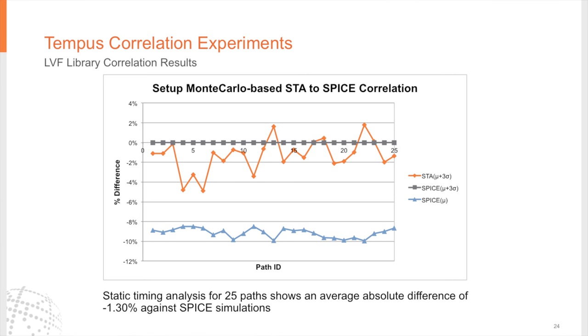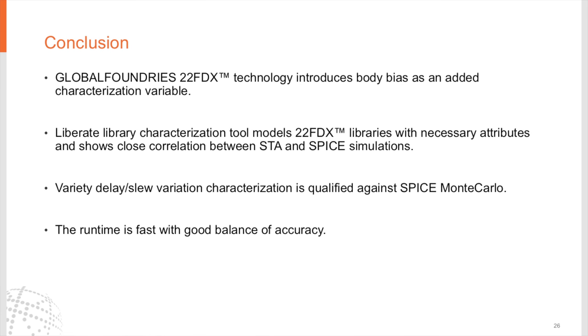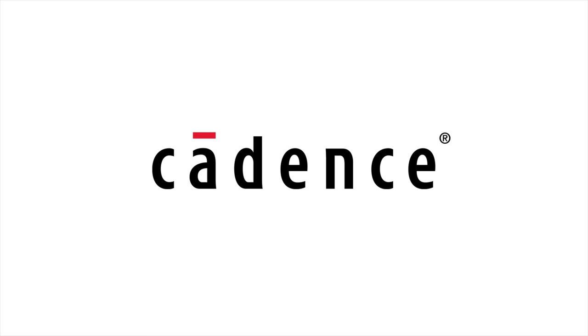Overall, the performance of Variety is acceptable and good from both runtime and accuracy perspectives. As mentioned, our 22FDX technology has introduced body bias as a new attribute in the library characterization process. The library characterization solution in Liberate is able to characterize our 22FDX library with all the necessary attributes and has shown very good correlation with SPICE simulations. Variety variation characterization is able to characterize LVF libraries, and qualification against SPICE Monte Carlo simulation for delay and slew has been very close. Overall, Liberate and Variety have a good balance between runtime and accuracy and will be part of our characterization flow.